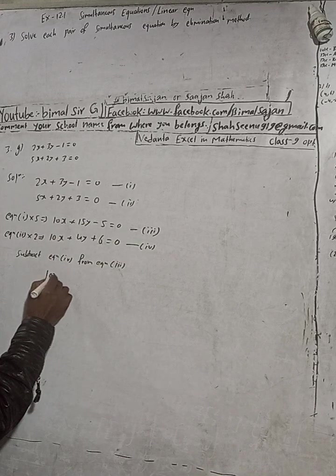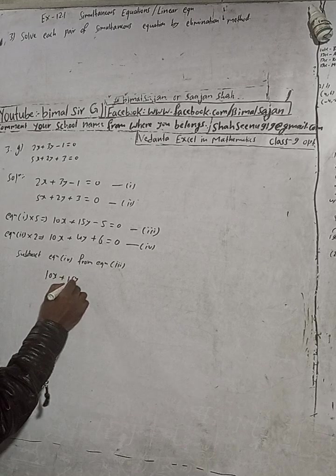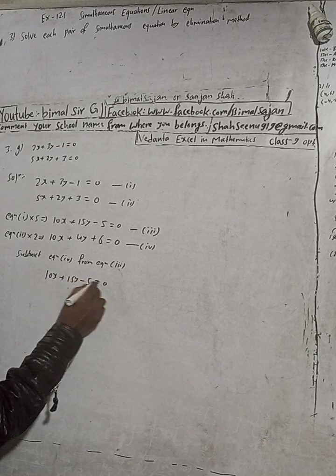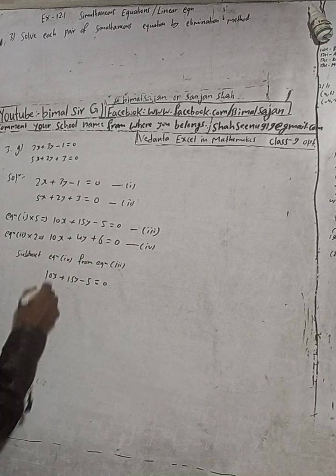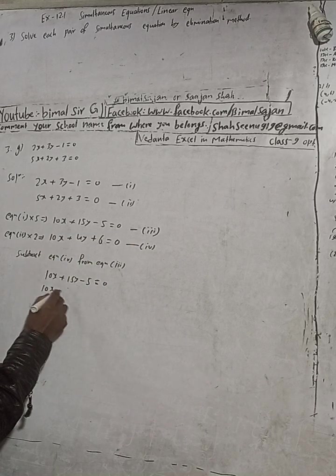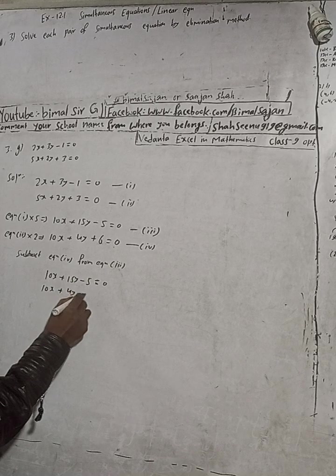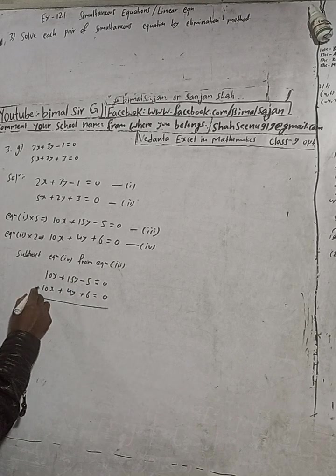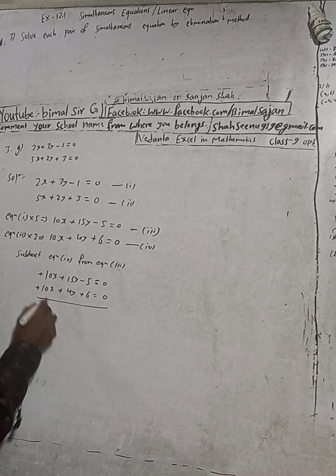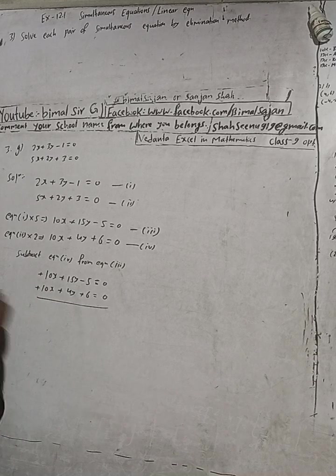So first is this here, then 10x plus 15y minus 5 is equal to zero. This is the equation again. Now this is equation four number. Equation we go here: 10x plus 4y plus 6 is equal to zero. So subtracting, this is plus plus.